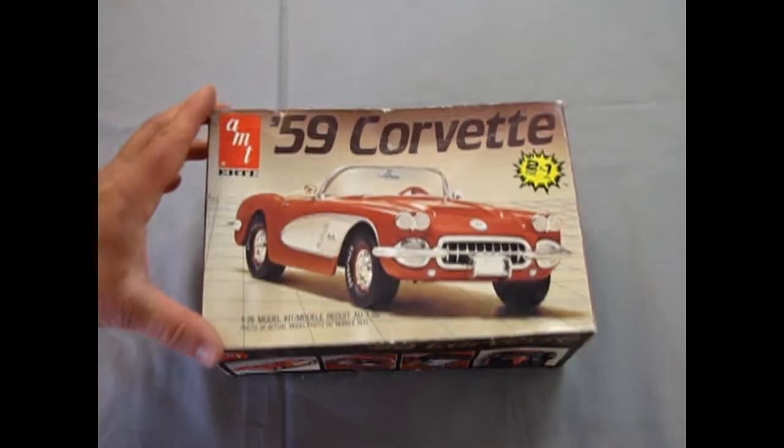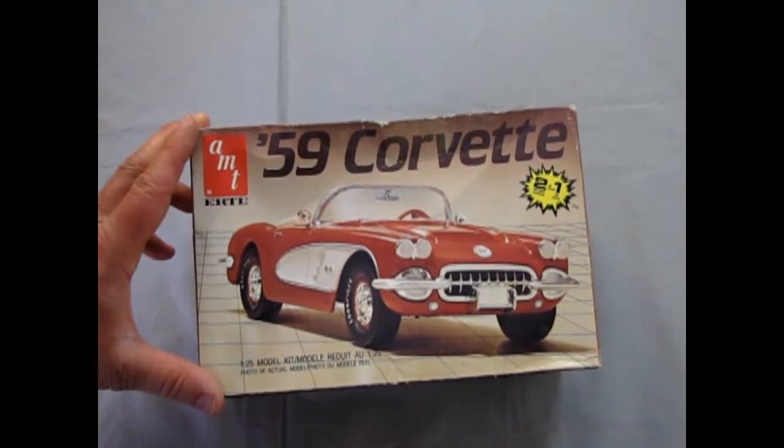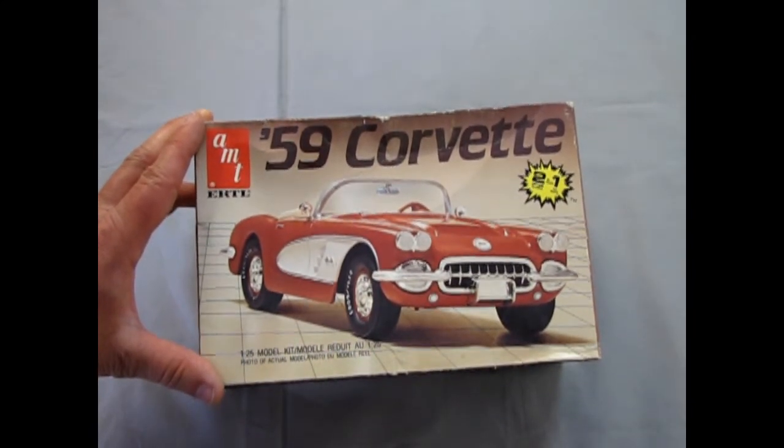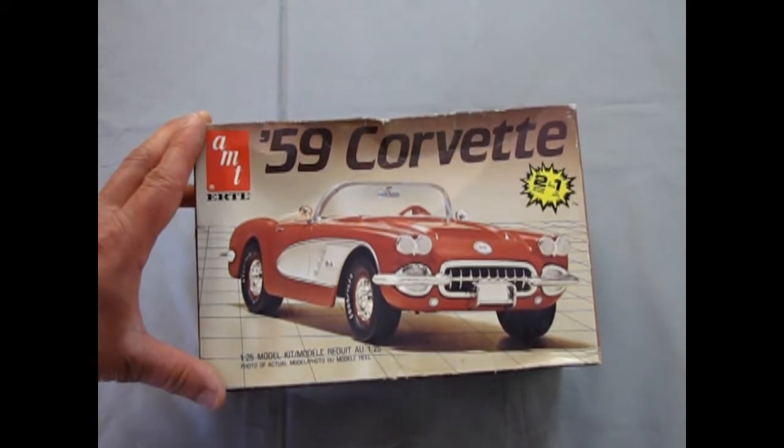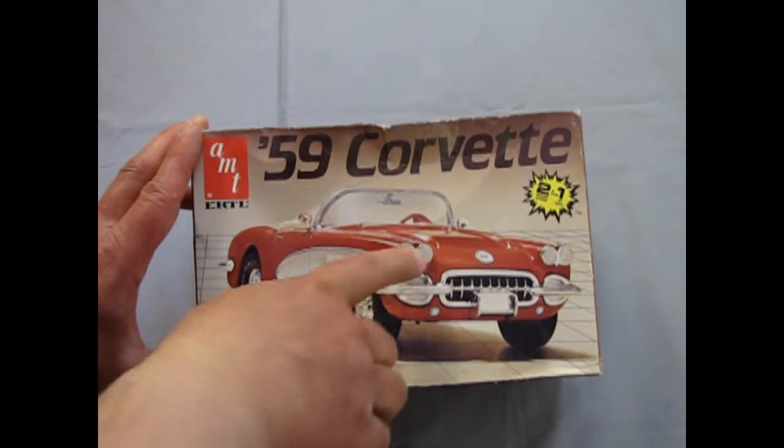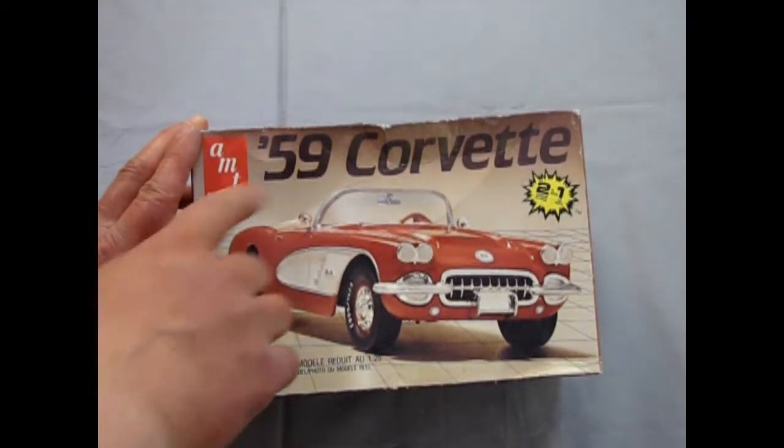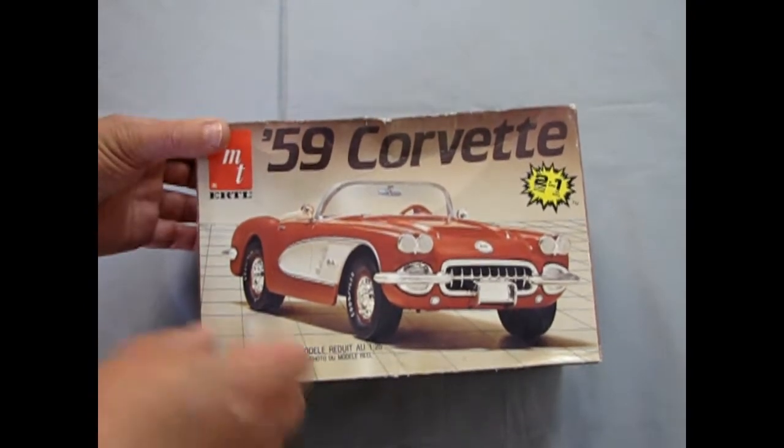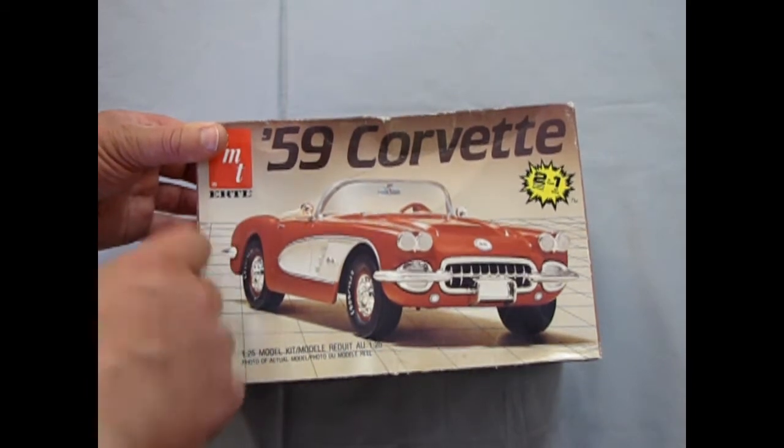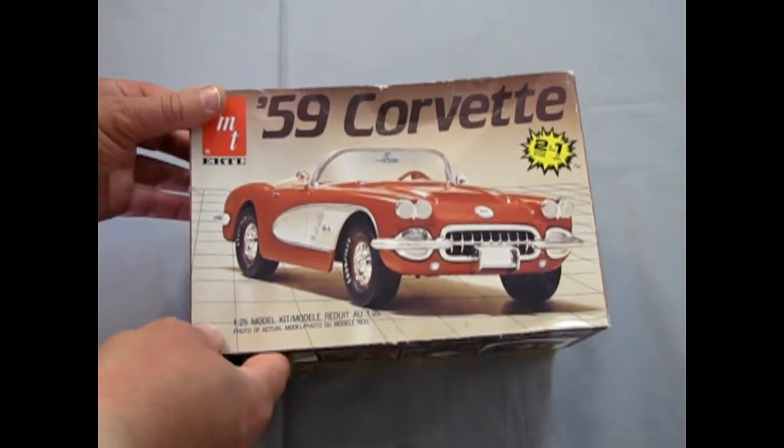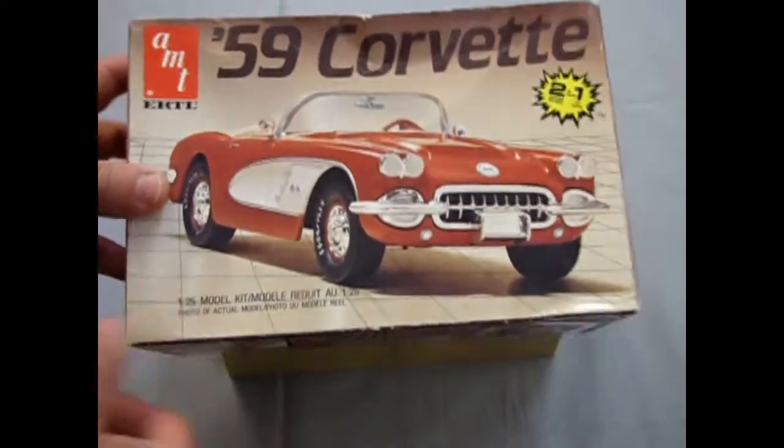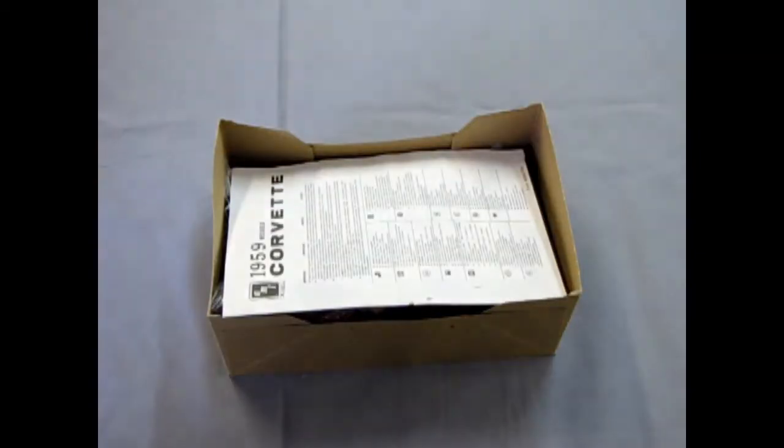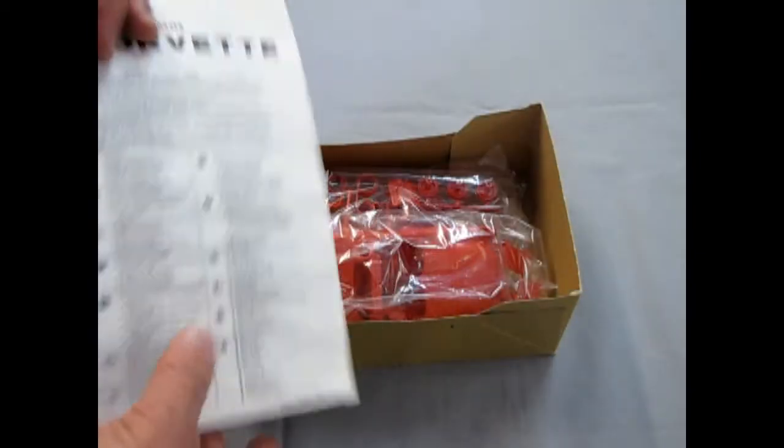Let's open up the lid on this vintage kit from 1986. This is a 1959 AMT Ertl Corvette. But I do believe this has been rebranded as a 1960 because there wasn't really any change between the two. 1958 had ribs on the hood and extra chrome spears on the trunk lid. But 59 and 60, they removed those. And then 61 has the duck bill rear back to it. This is actually branded as a 59 and it's a 2-in-1 so you can build it as stock or custom.